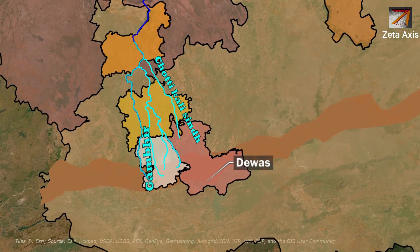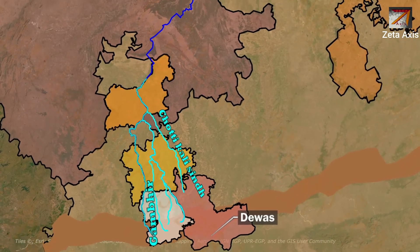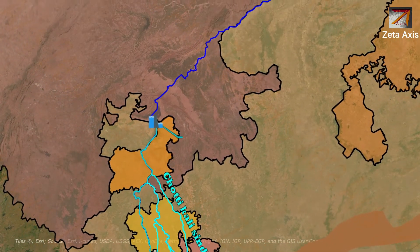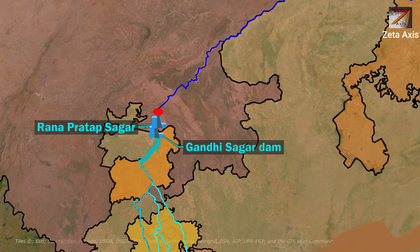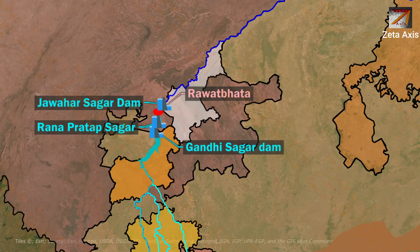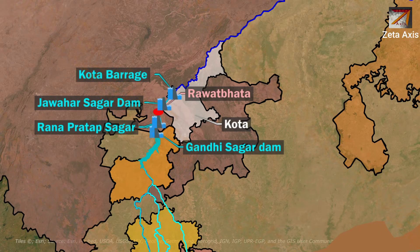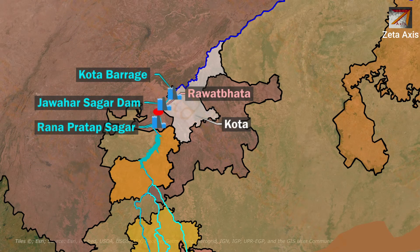On the border of Madhya Pradesh and Rajasthan, a series of four dams are built on the Chambal river. First is the Gandhi Sagar Dam in Mandsaur district of MP, whose reservoir area is the second largest in India after the Hirakud reservoir. Second is the Rana Pratap Sagar Dam at Rawatbhata in Rajasthan. Third is the Jawahar Sagar Dam southwest of Kota in Rajasthan. The fourth is the Kota Barrage, which diverts water released after power generation at the upstream dams for irrigation in Rajasthan and Madhya Pradesh.